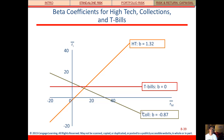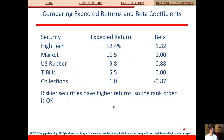Looking at the betas for HITECH, Collections, and T-bills: T-bills are flat because there's no risk. HITECH has a beta of 1.32, and Collections — having that negative correlation — has a negative beta and therefore a downward slope. Here are the expected returns calculated earlier, with betas given to us. Riskier securities have higher returns and higher betas.